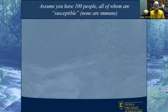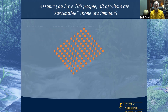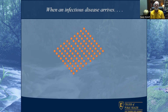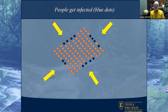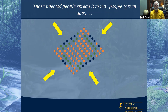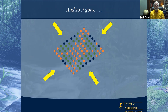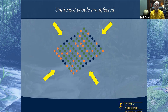Let's show a little bit here. Say you have 100 people, all of whom are susceptible — none of them are immune — and an infectious disease arrives. A number of people, many people, will get infected. They then will infect others, now shown in green as secondary infections, and so it goes until most people are infected.